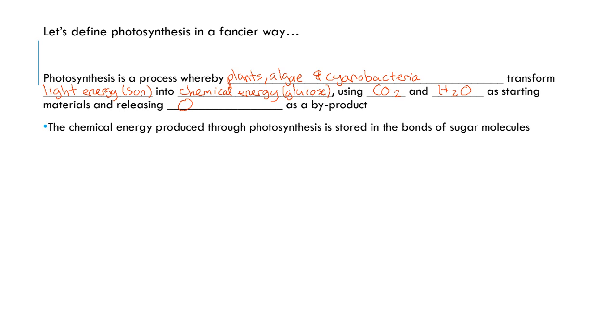The chemical energy produced through photosynthesis is stored in the bonds of the sugar molecules, for example glucose, which can eventually be used to make other kinds of molecules. So that was the fancier definition.